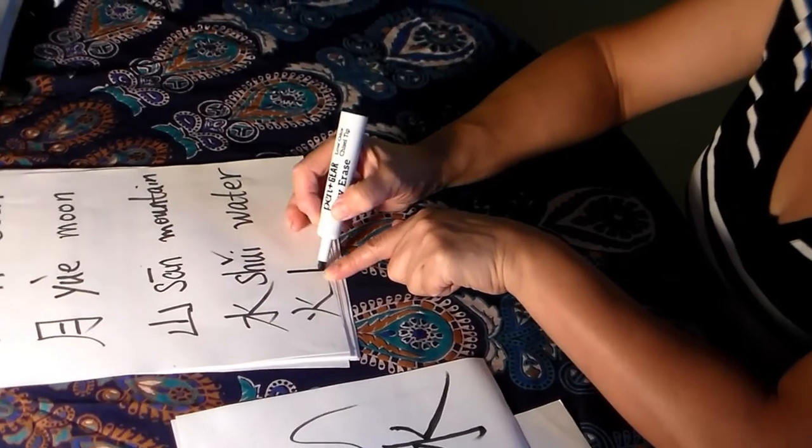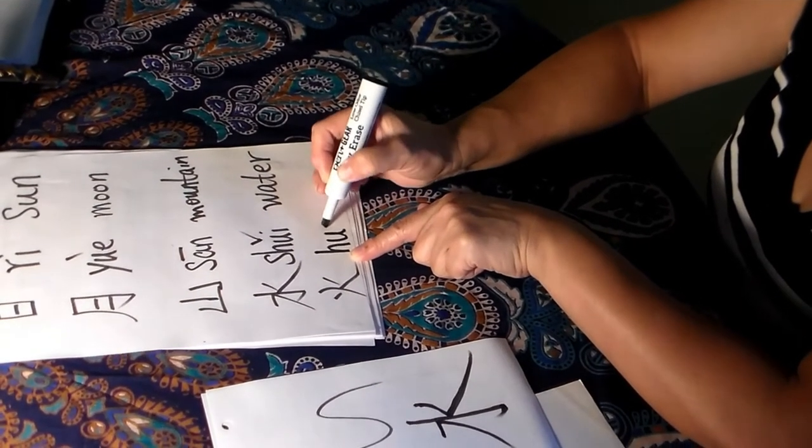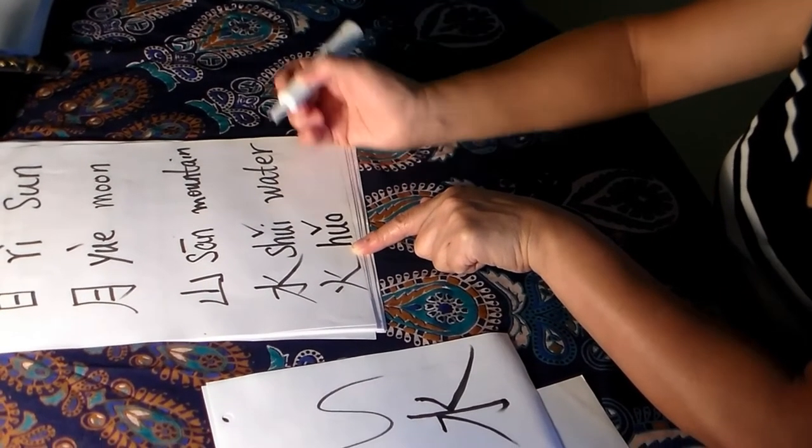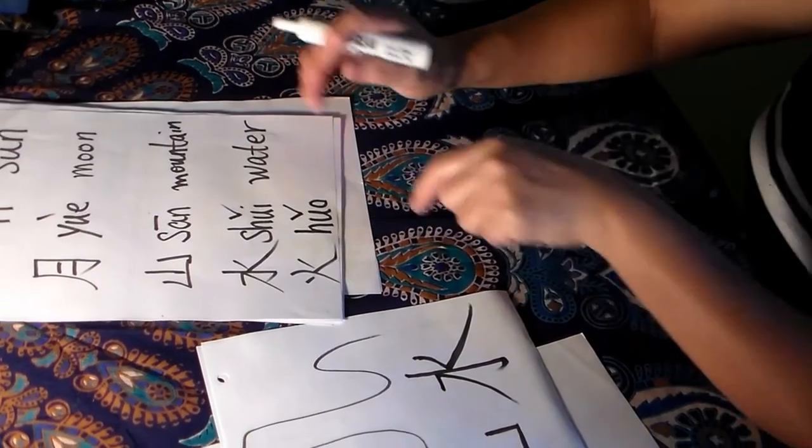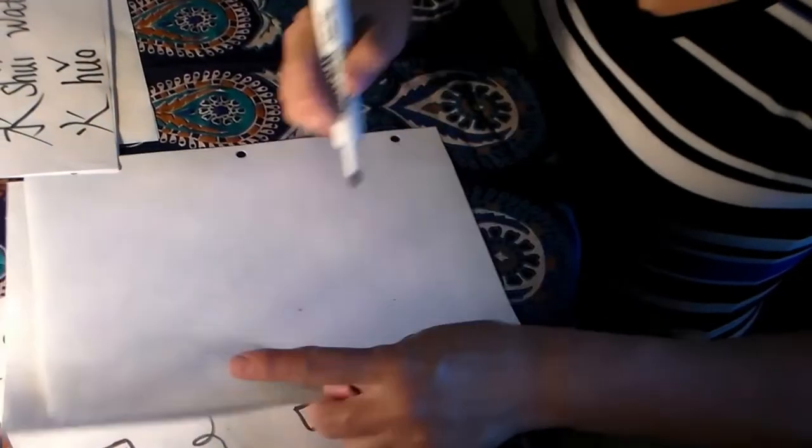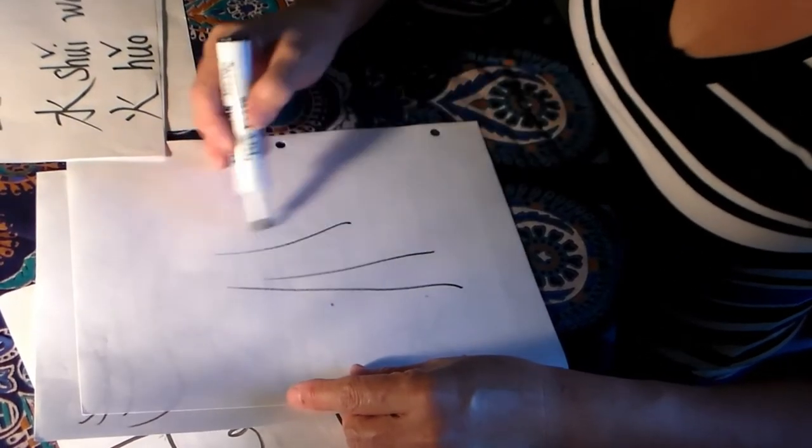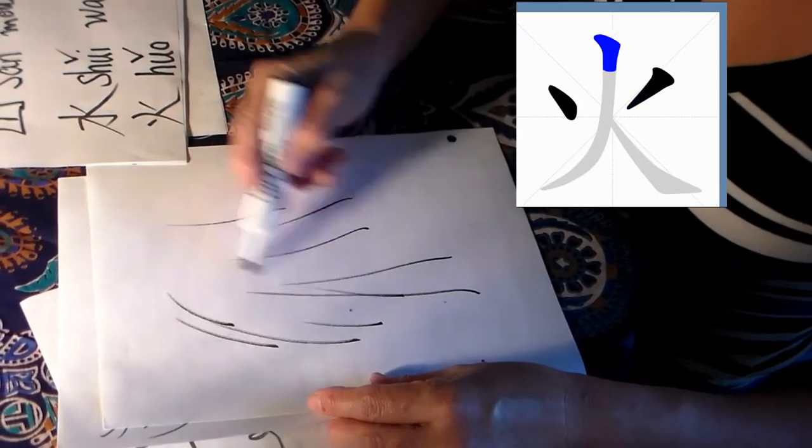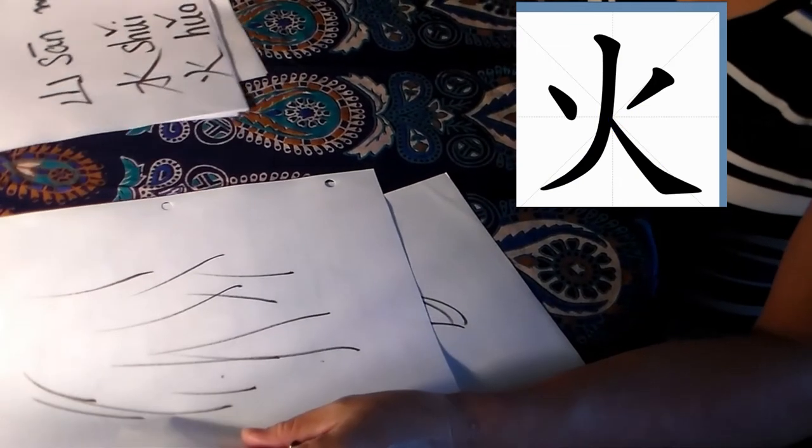This is huo. H, U, O. Huo, third tone. It's the same. You know, like we make a fire. Fire, right? Looks like fire, right? Okay.